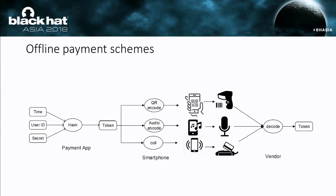This is a widely deployed offline payment scheme diagram. To do a payment, the payment application first generates a token for the user. The token is generated by hashing the current time, the user ID, and the secret key pre-shared between the user and the mobile service provider. The token will then be modulated to one of the channels.